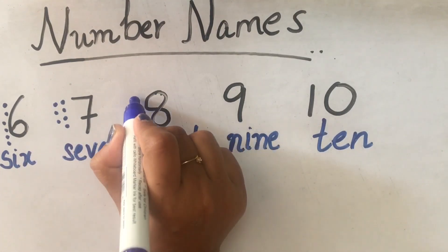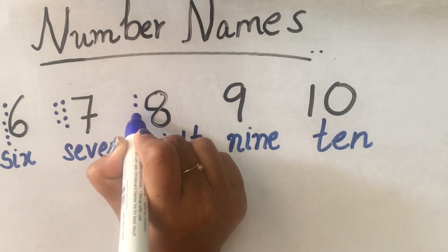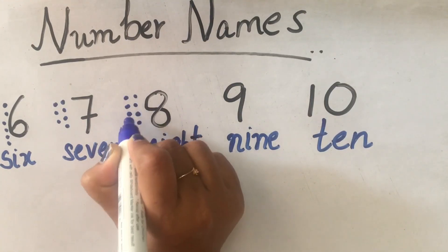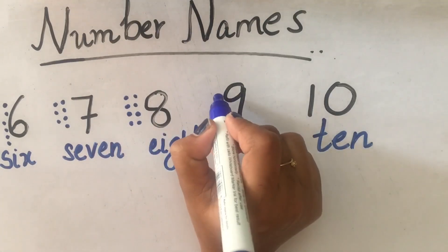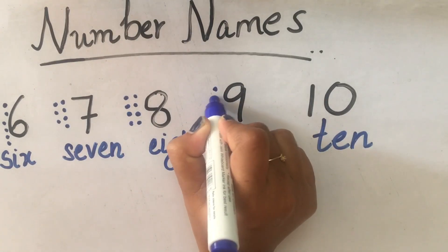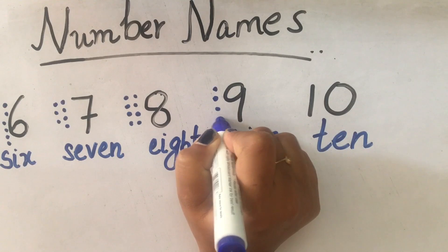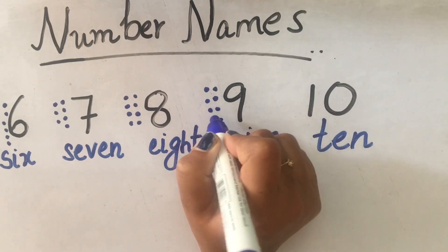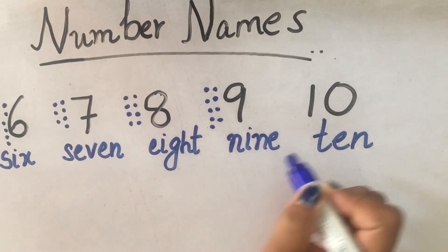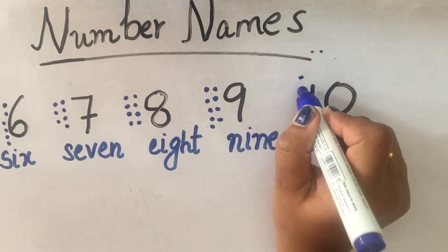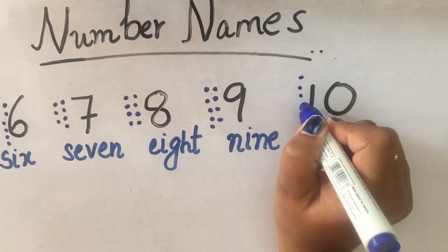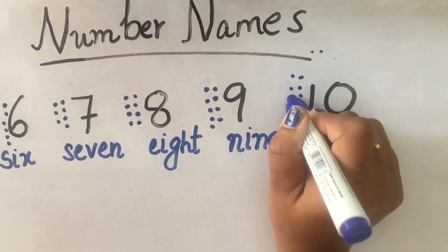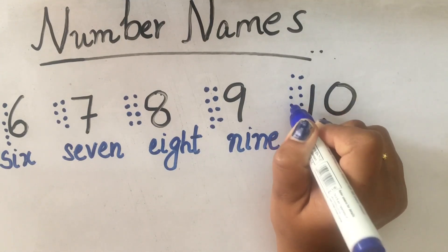8 is 1, 2, 3, 4, 5, 6, 7, 8 dots. And 10 is 1, 2, 3, 4, 5, 6, 7, 8, 9, 10 dots.